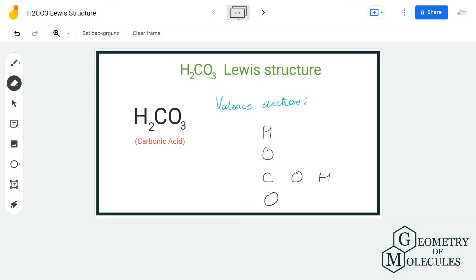Hi guys, welcome back to our channel. In today's video we are going to help you with H2CO3 Lewis structure. It is the chemical formula for carbonic acid, and to determine this Lewis structure we will first determine the total number of valence electrons.